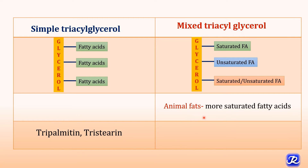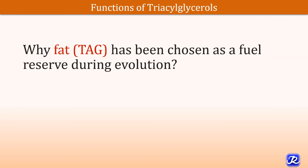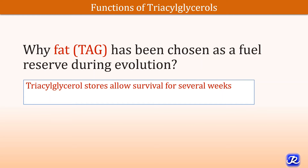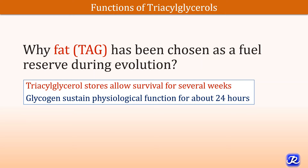Animal fats contain more saturated fatty acids and vegetable fats contain more unsaturated fatty acids. The most important function of triacylglycerol is storage of energy in adipose tissue. An important question is: why has fat — that is TAG — been chosen as a fuel reserve during evolution? Triacylglycerol stores allow survival for several weeks, while the carbohydrate form of energy storage, glycogen, sustains physiological function for only about 24 hours. Let's try to understand the answer to this question.